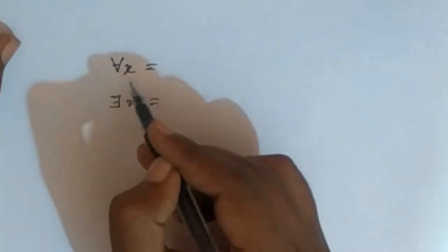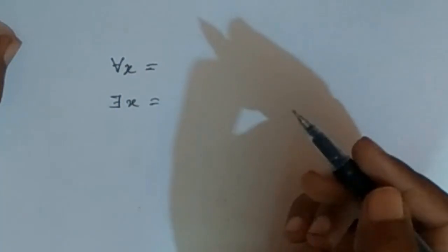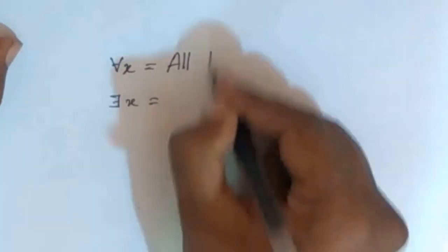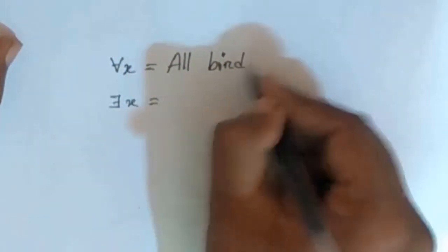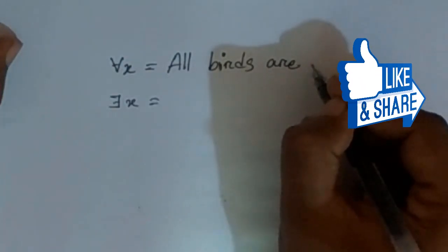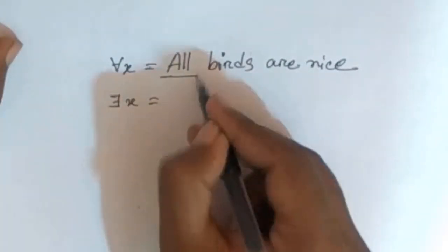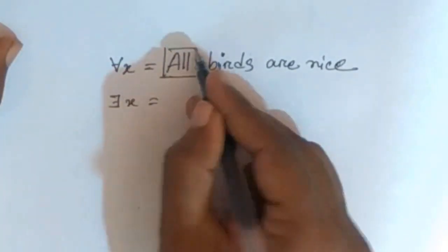The universal quantifier means 'for all x'. For example: 'All birds are nice.' That means we are making a statement about all elements.